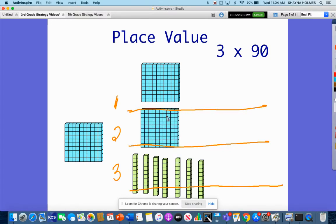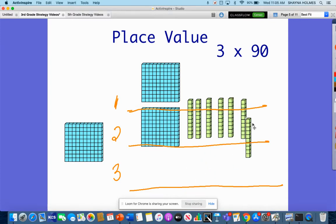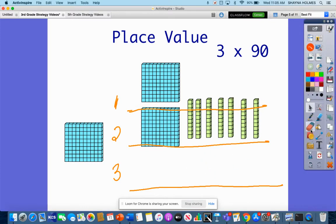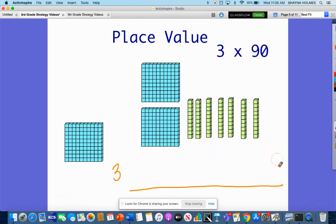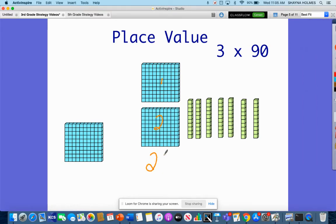Now I don't think I'm going to have enough tens to make a hundred here. So I'm just going to have 200 and then 1, 2, 3, 4, 5, 6, 7 tens left. So erase our rows now because we no longer need those. My final answer here is going to be 200 plus 70, so I have 270.